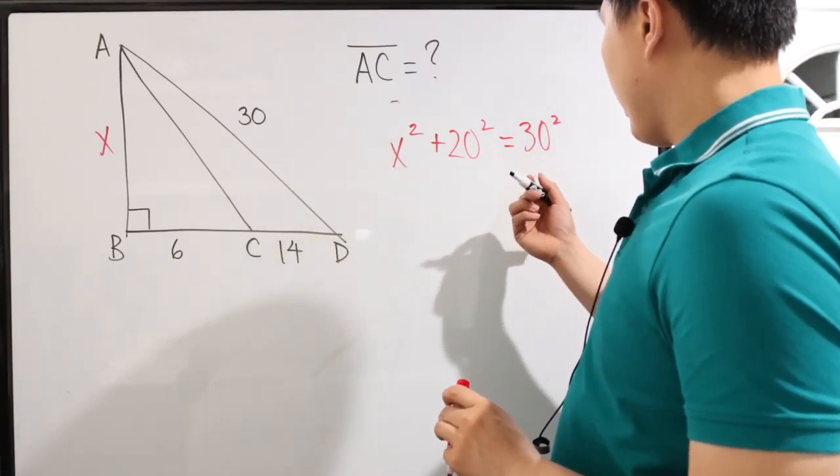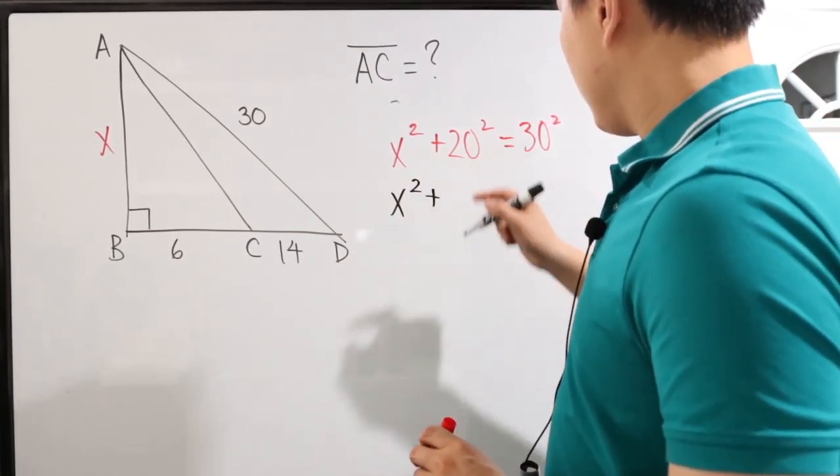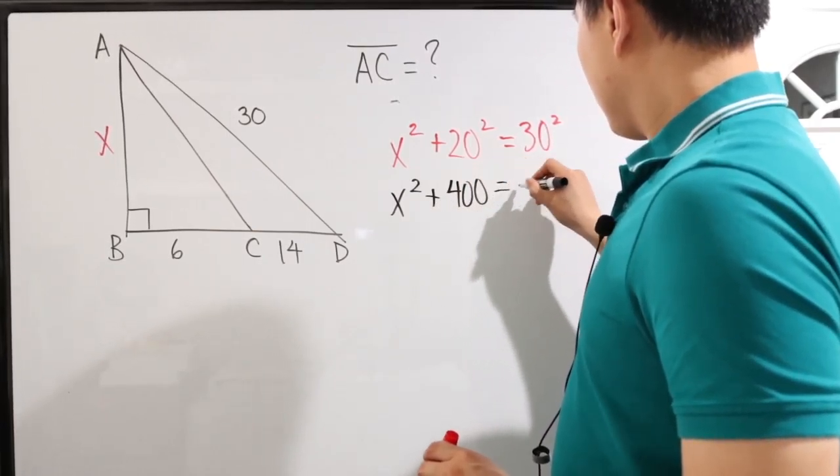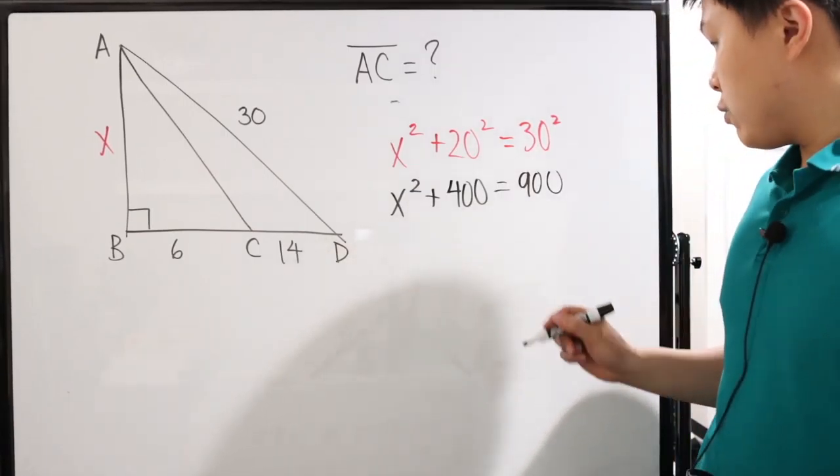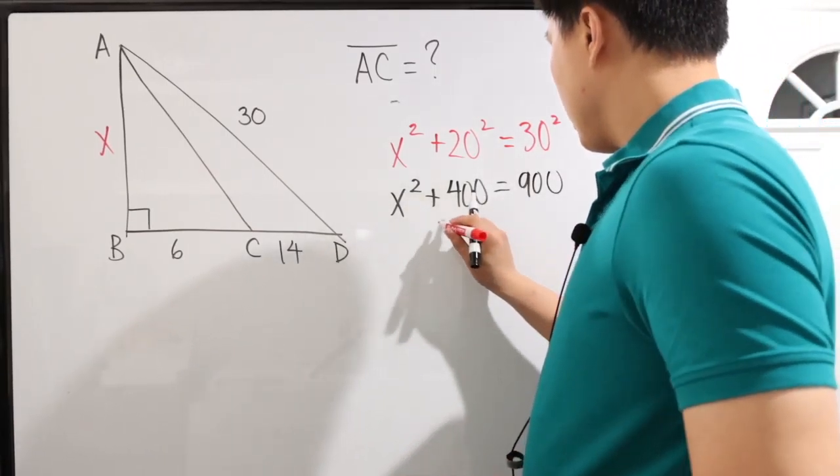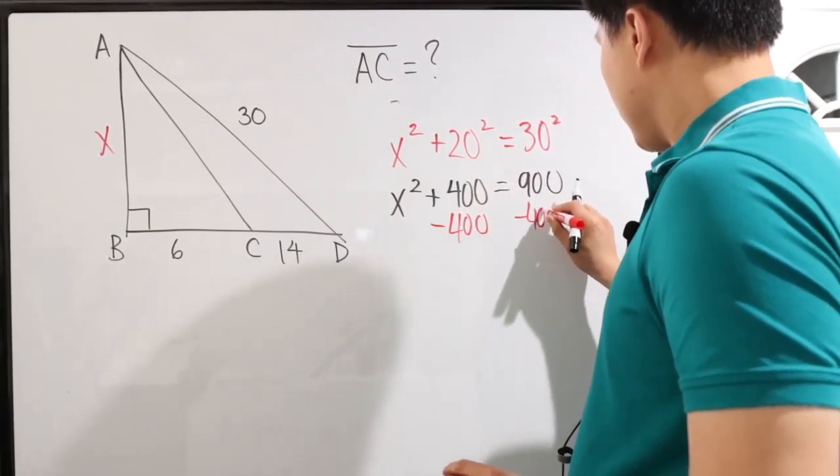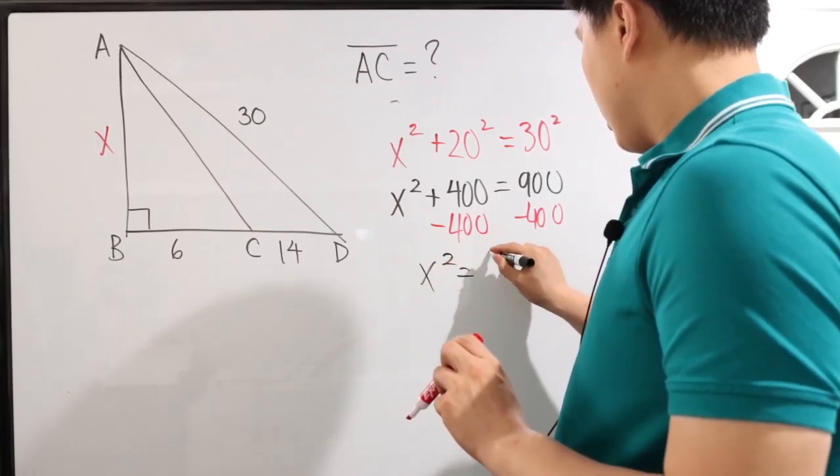Well, in this case, what do we have? Well, X squared plus, and 20 times 20 is what? 400 equals 30 times 30 is 900. All right, cool. So this is what we have so far. All right, we're going to figure out by subtracting 400, subtract 400.